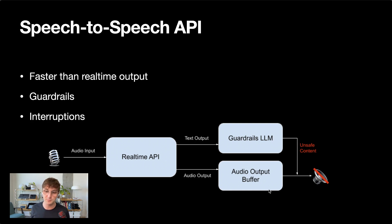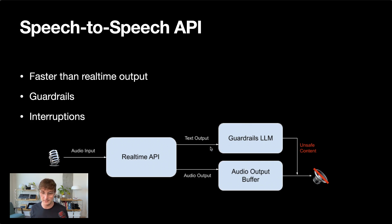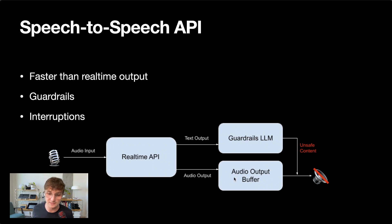This is just one way to approach this — there are many ways to deal with guardrails and your LLM. But this is a simple example of using the text output to moderate your output, as well as generating the audio output into a buffer.